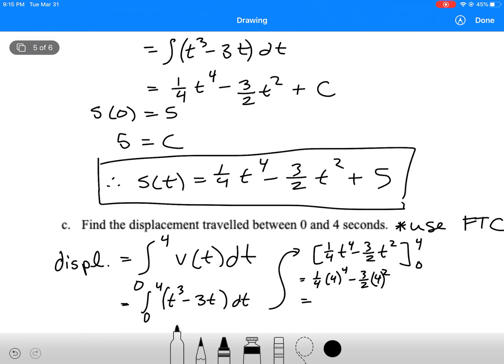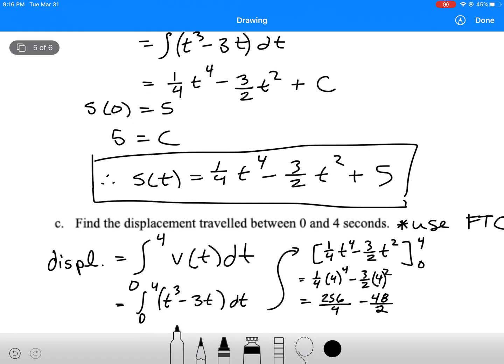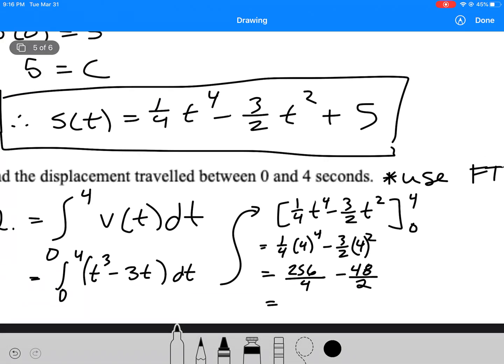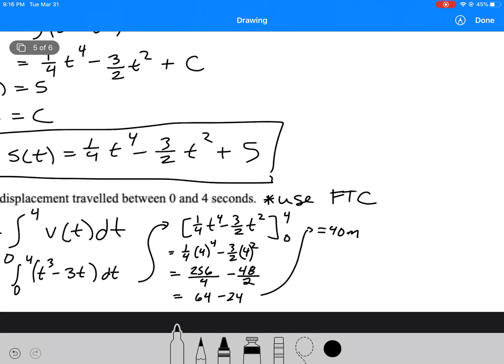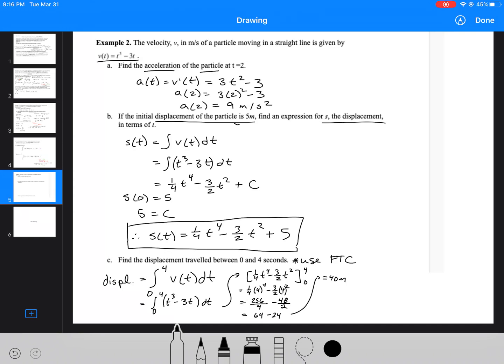4 to the 4 is 256. So now I've got 256 over 4. 4 squared is 16, I know that one, and 16 times 3 over 2 is 48 over 2. Those numbers look pretty nice. 64 minus 24, which gives me 40. That would be my displacement.